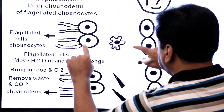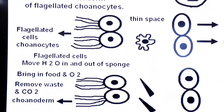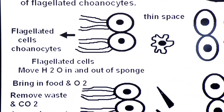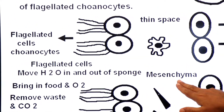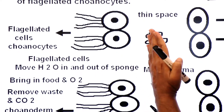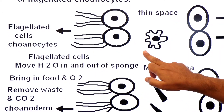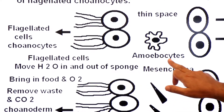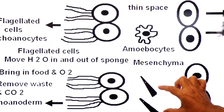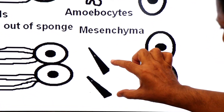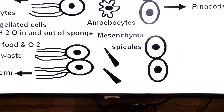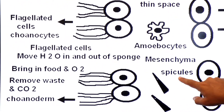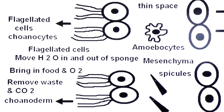There is a thin space between these two layers called mesenchyme. In the mesenchyme you find amoeba-like cells called amoebocytes. Also in the mesenchyme there are hard needle-like structures called spicules, which are the endoskeleton of sponges.